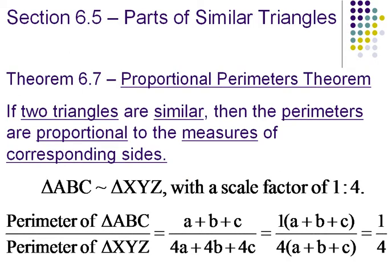So, say we have triangle ABC is similar to XYZ with a scale factor of 1 to 4. Say we calculate the perimeter of ABC, and whatever it comes out to be, with the scale factor of 1 to 4, whatever fraction it is would reduce to the fraction 1 over 4, as we see here. The perimeter of ABC over XYZ, all the sides are at a scale factor of 4, and as you can see algebraically, that does reduce to 1 fourth.